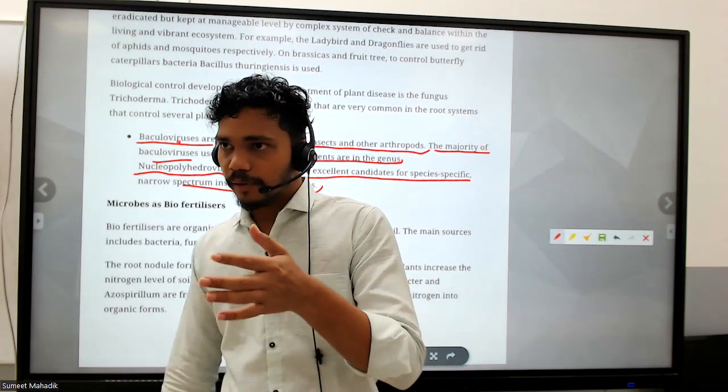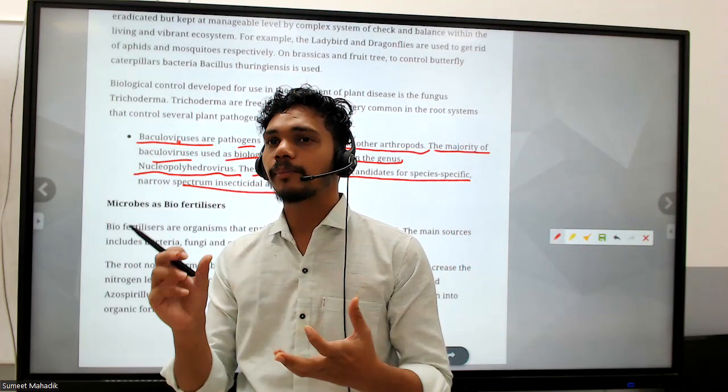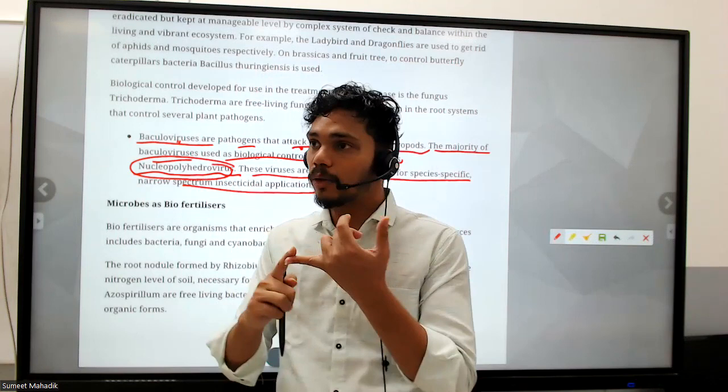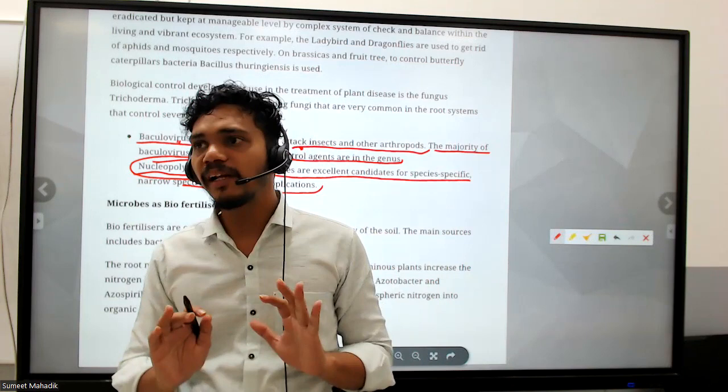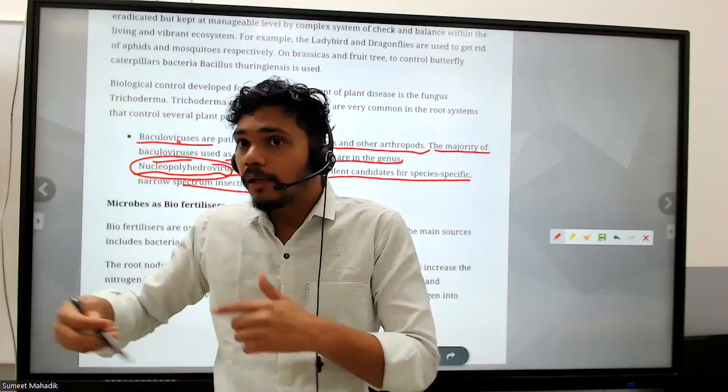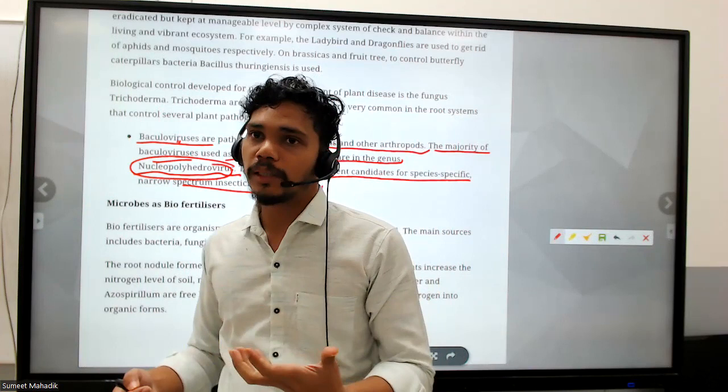Just like antibiotics, which can be narrow-spectrum or broad-spectrum - a doctor initially gives a broad spectrum, and if treatment isn't working, gives narrow spectrum. Narrow spectrum can't be used for too long because bacteria can develop resistance to it. Similarly, narrow-spectrum insecticide application is the last choice.